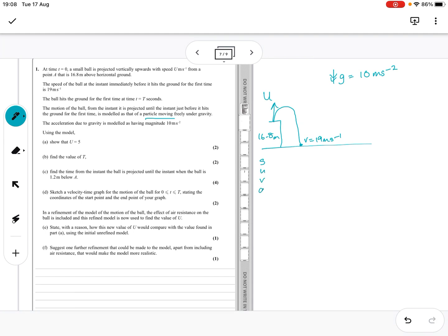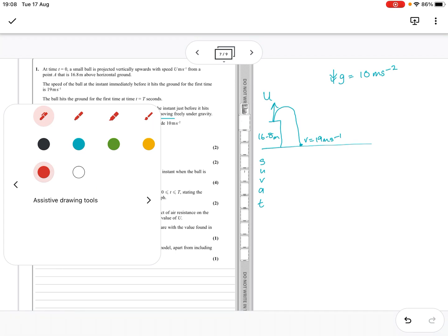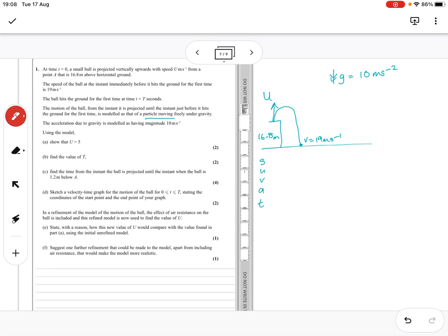Okay, so we're going to do SUVAT, and the big question is, which way is positive? So I'm going to say positive is upwards. So the distance travelled is going to be down here, so that's minus 16.8. My initial speed is u. My final velocity is downwards, which is minus 19. My acceleration is downwards, which is minus 10.